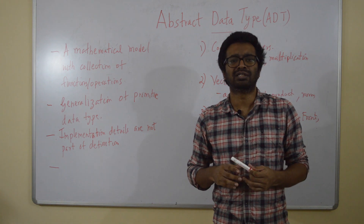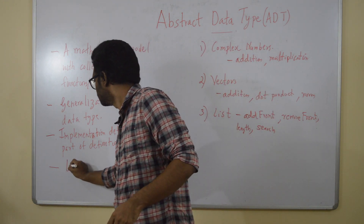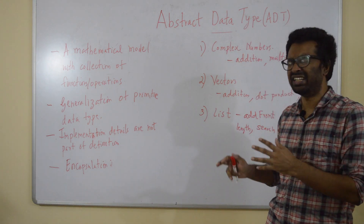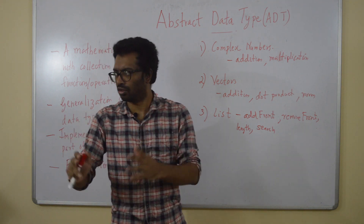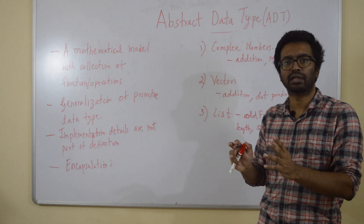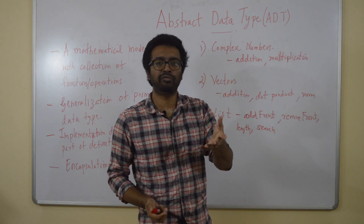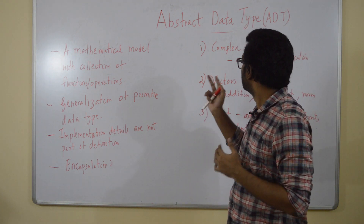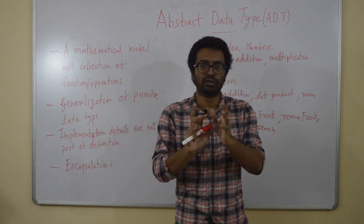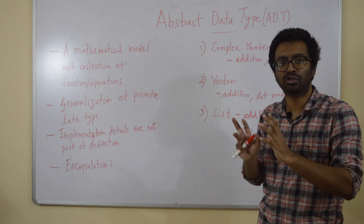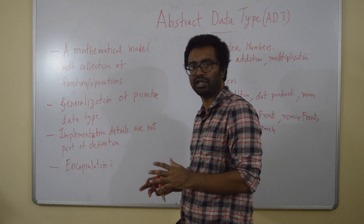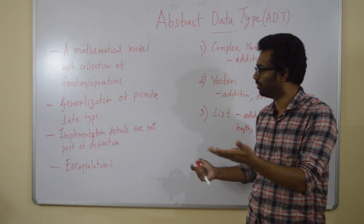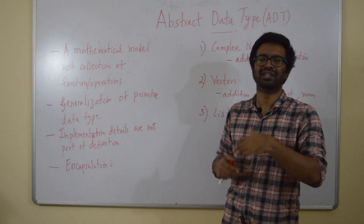An abstract data type in some sense supports encapsulation. ADTs encapsulate the data type — what I mean is that all the definitions of the data type and its associated functions or operations are collected into one part of your project. It could be through header files — you can have a separate file for a particular data type like vector or complex number. The idea is that you collect and store all the functions and operators for this data type and encapsulate it in one place. The advantage is that if you need to fix a bug in that data type, you just go there and fix it.